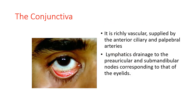The conjunctiva is richly vascular, supplied by the anterior ciliary and peripheral arteries. Lymphatics drain to the pre-auricular and sub-mandibular nodes, corresponding to that of the eyelids. This is an important point because in viral conjunctivitis you get the pre-auricular and sub-mandibular nodes palpable.